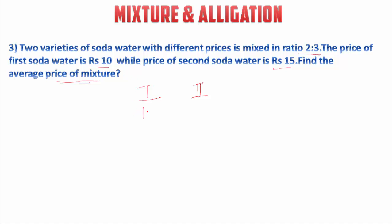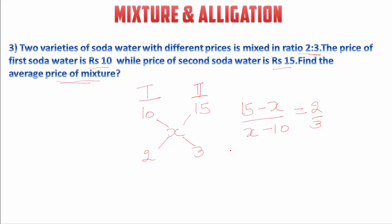The second soda water is rupees 15 and the ratio between the two is 2:3. We have to find the average price, so let's take the average price as x. Using the same process as earlier: 15 minus x over x minus 10 equals 2 by 3. We do cross multiplication: 3 into 15 minus 3x equals 2x minus 10, which gives us 45 minus 3x equals 2x minus 20.